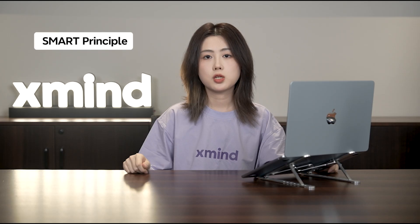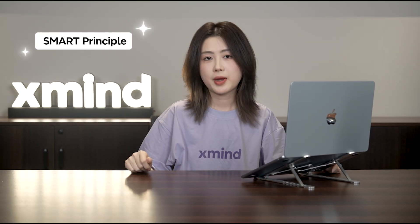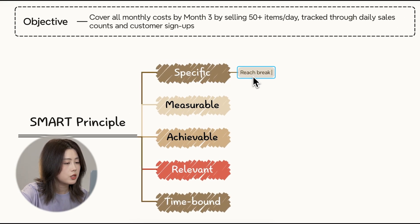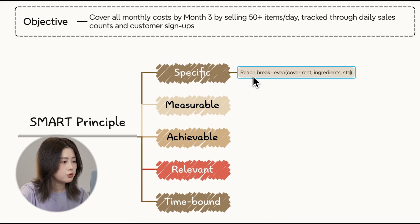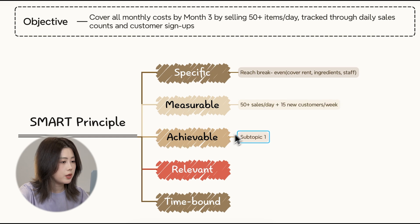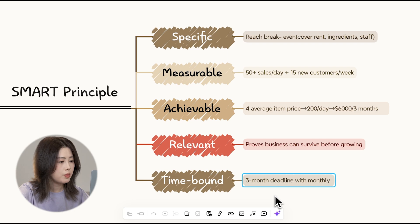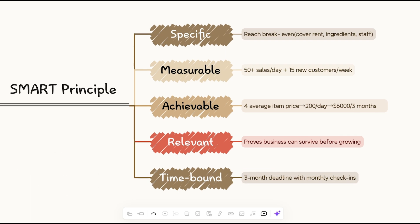After that, use the SMART principle to set your goals. Make them Specific — for example, $5,000 in the first month. Measurable — track sales. Achievable — based on your resources. Relevant — aligning with your vision. Time-bound — achieve in three months.